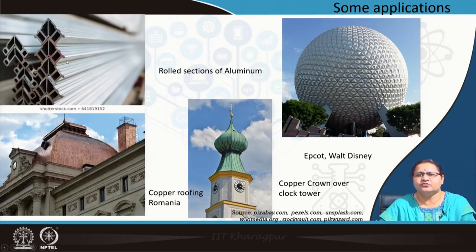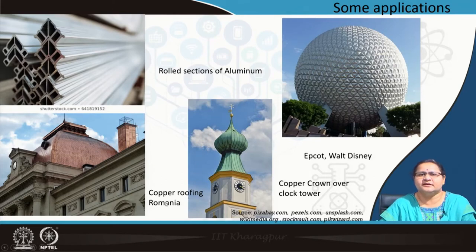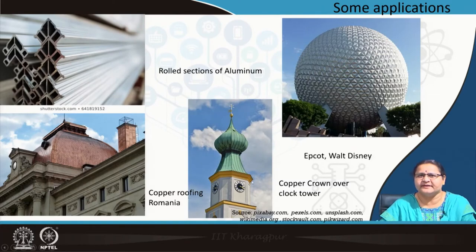This is used on the external to avoid the corrosion component. You also see another building — the Epcot structure at Walt Disney — which is also entirely made of aluminum panels. Some 11,000 panels have been assembled together to give this spherical shape. Aluminum is very soft. Now in the other two pictures, both are made of copper — it is copper roofing, where copper has been used to seal water entry and make the structure airtight. You can see a difference in color due to oxidation of copper in one picture, where it has become green.